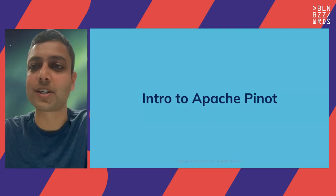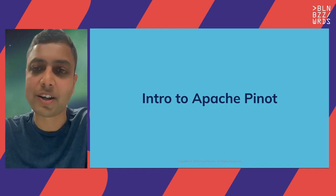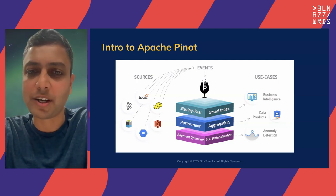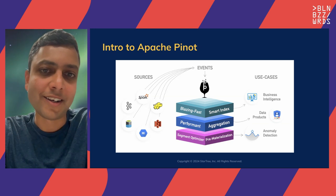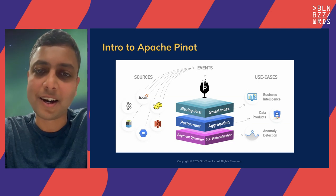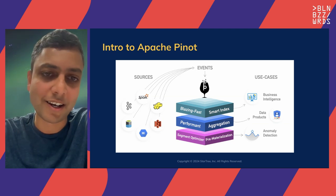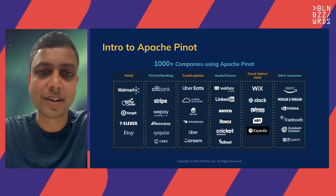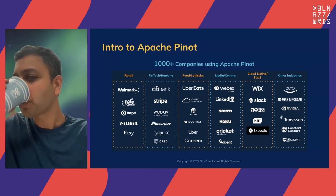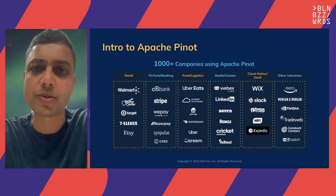If you step back and look at all these use cases, you can see that OLTP databases, although being used today for analytics, are not really suitable for these use cases. This is where systems like Apache Pinot were born to tackle these analytical use cases. For those who haven't heard of Apache Pinot, it's an open-source columnar database coming out of LinkedIn. It's able to ingest data from various data sources like Kafka, S3, and GCS, and make it available for querying in real time.